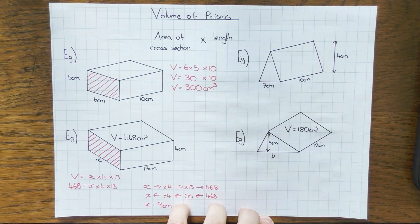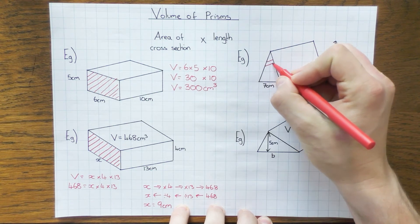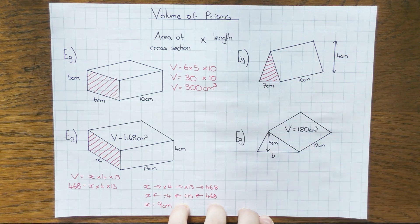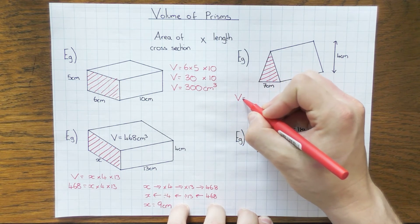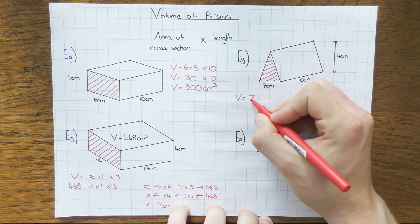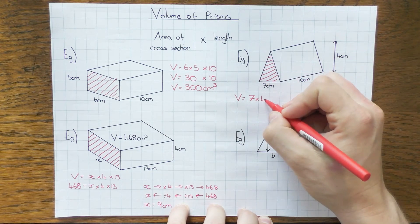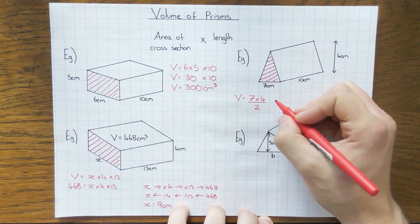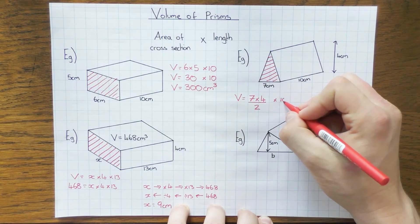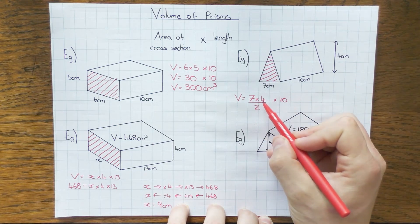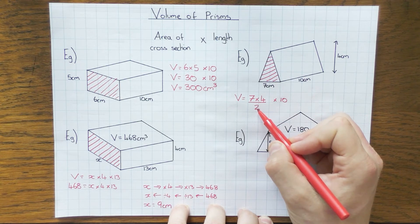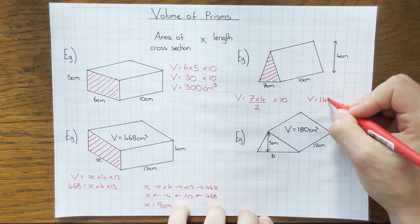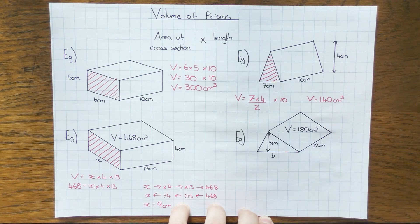Now let's have a go at something slightly trickier — a triangular prism. The area of the cross section is the triangle, because the triangle is constant throughout the whole shape. The volume equals the base which is 7, times by the height of the triangle which is 4, and don't forget you half it. So 7 times 4 is 28, halved gives 14 as the area of the cross section, times by the length which is 10. The volume equals 140 centimetres cubed.